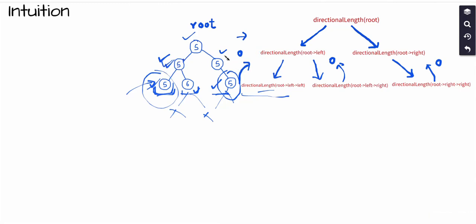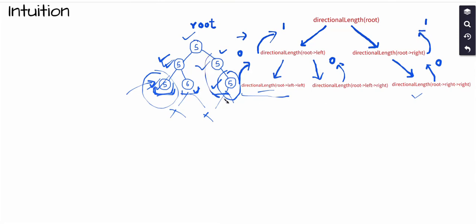At the next level up, this function call corresponds to a node whose value matches its left child, so it returns 1 to the parent. Similarly, the value for another node matches its right child, so that function also returns 1. So we get 1 from the left subtree and 1 from the right subtree. At the root node, we verify that the root's value matches both the left and right children — 5 matches 5 on both sides — contributing a plus 2, giving 1 plus 1 plus 2 equals 4.